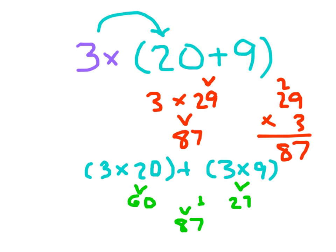Again, this here is the distributive property. 3 times 20 plus 3 times 9 does equal this right here.